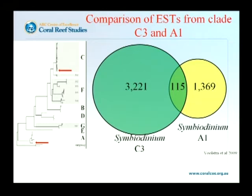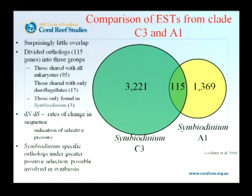In addition, we have an interest in comparing between different symbiodinium strains. While we were doing our initial EST work, Monica Medina at the University of California was also doing something similar. We work on clade C; she was working on clade A, which is the basal group of symbiodinium. This gave us the opportunity to compare between these two symbiodinium strains and see how similar they are. We had about 3,300 sequences and they had just over 1,300. We simply compared the two and found that surprisingly only 115 genes were expressed in both clade C3 and clade A1.